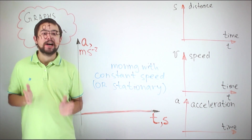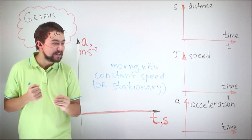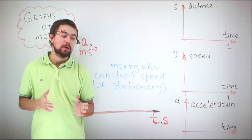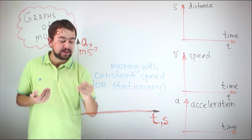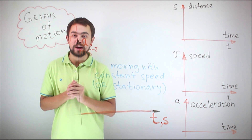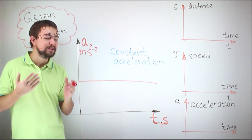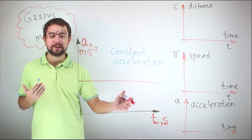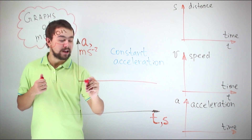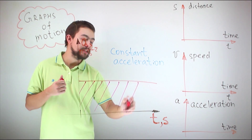The last type of graph is the acceleration-time graph. This is a graph of a body moving with constant speed or a stationary body — we see the acceleration is zero and does not change through time. This is a graph of a body moving with constant acceleration. Interestingly, the area under the graph is equal to the change in speed.